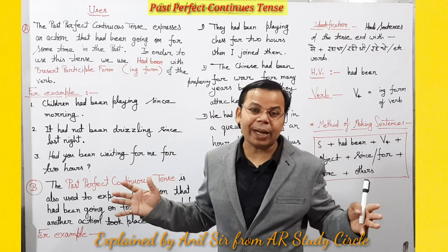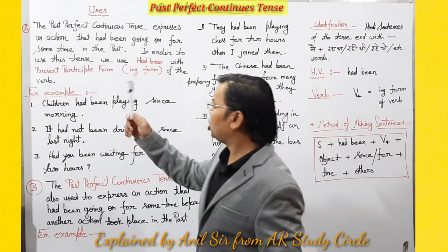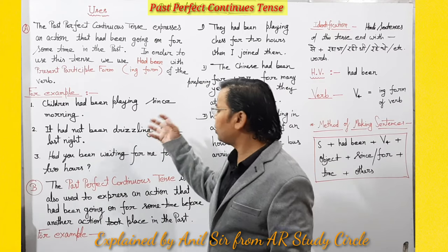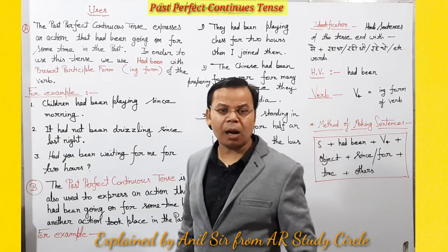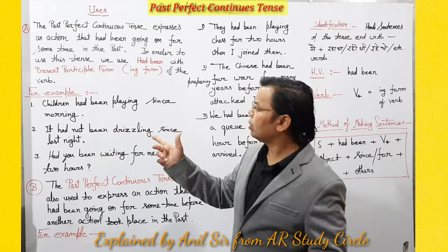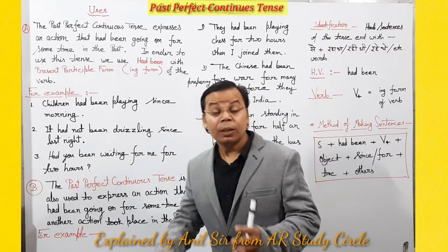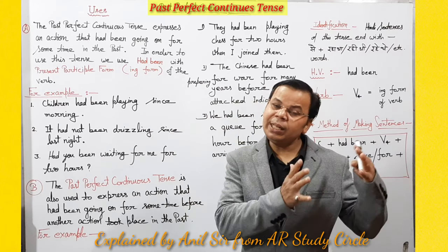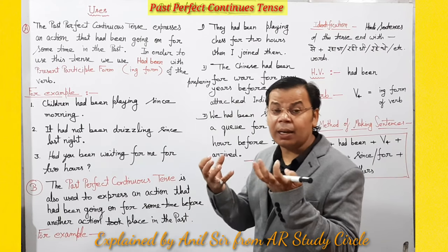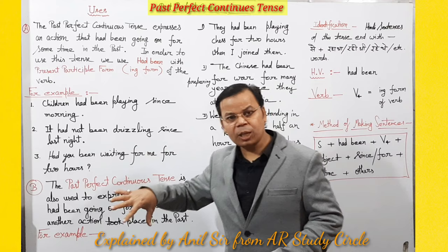Past mein jo action chal raha tha, continue ho raha tha, kisi particular time se — us action ko express karne ke liye Past Perfect Continuous Tense ka use karte hain. For example: 'Children had been playing since morning' — bache subah se khel rahe the. Here 'morning' is the particular time. Second example: 'It had been drizzling since last night' — pichli raat se boondha baandi ho rahi thi.